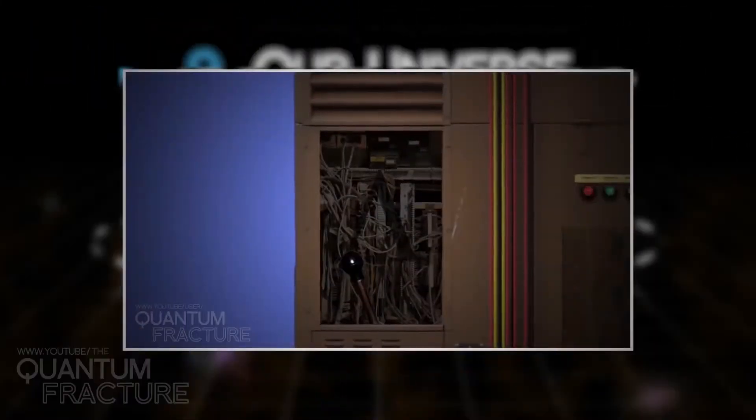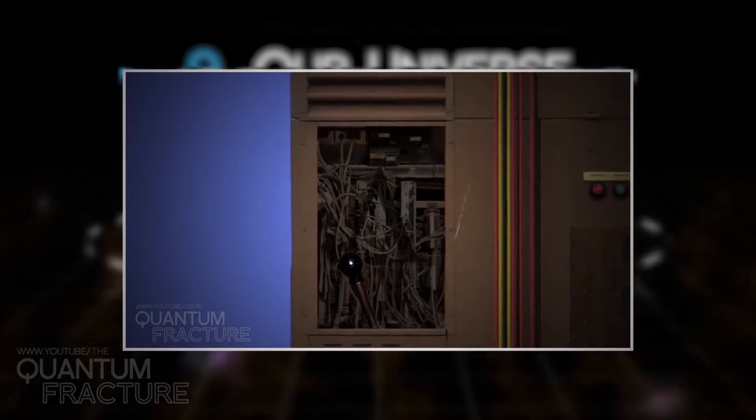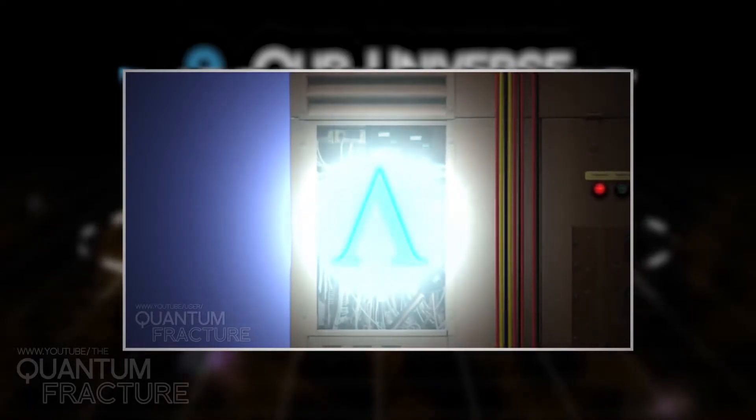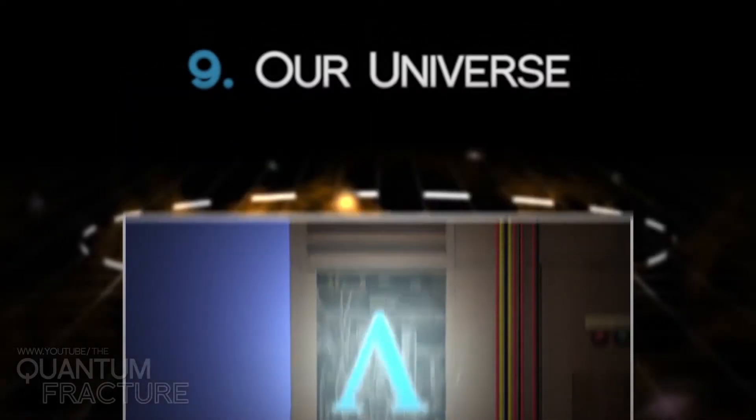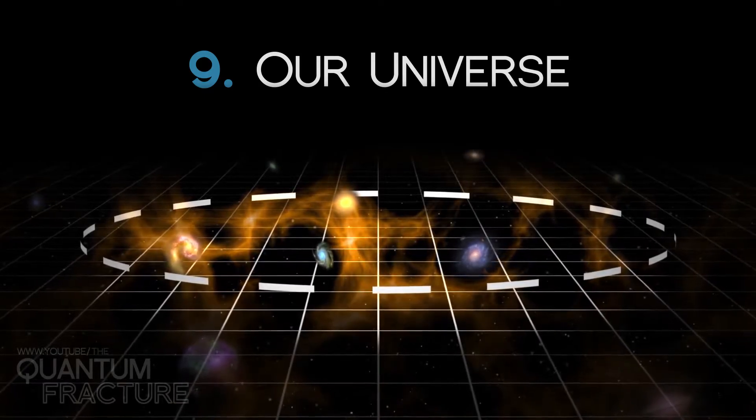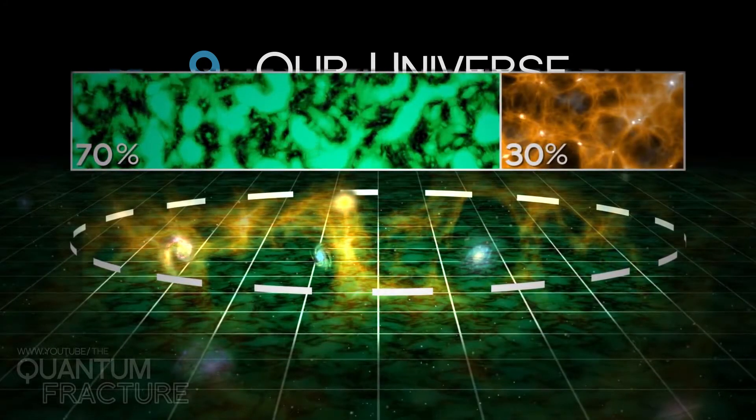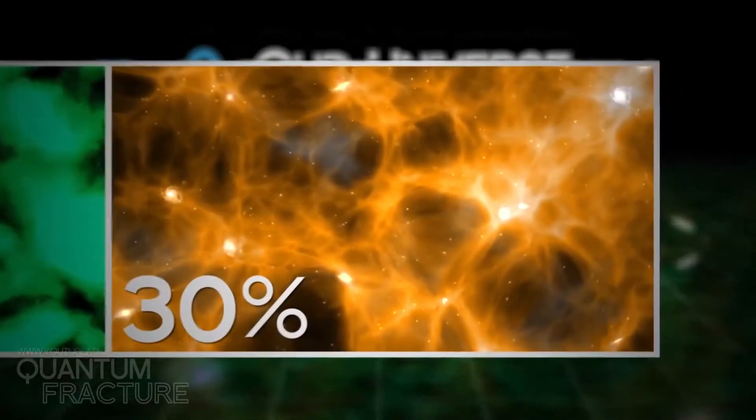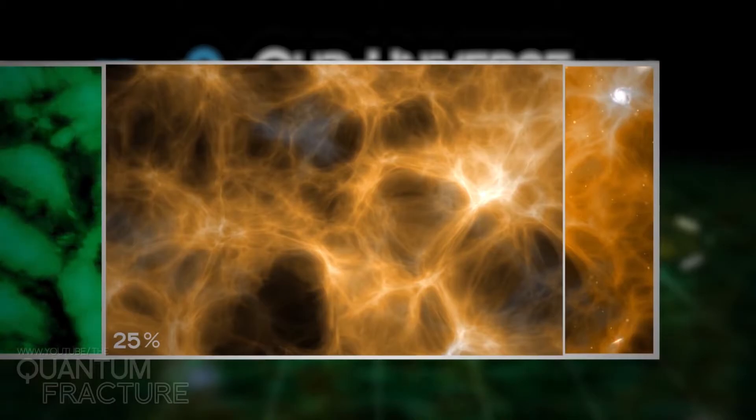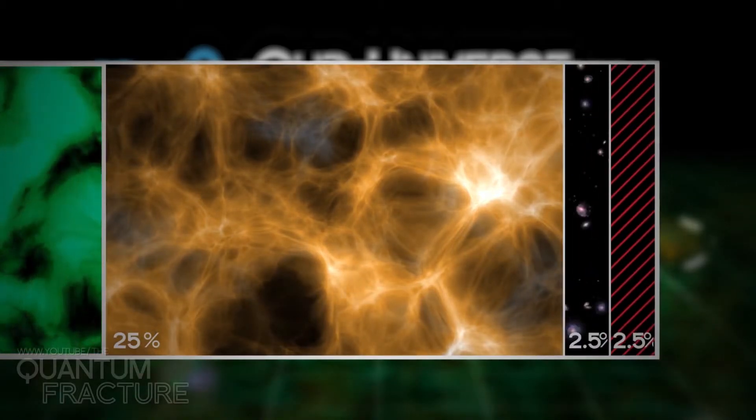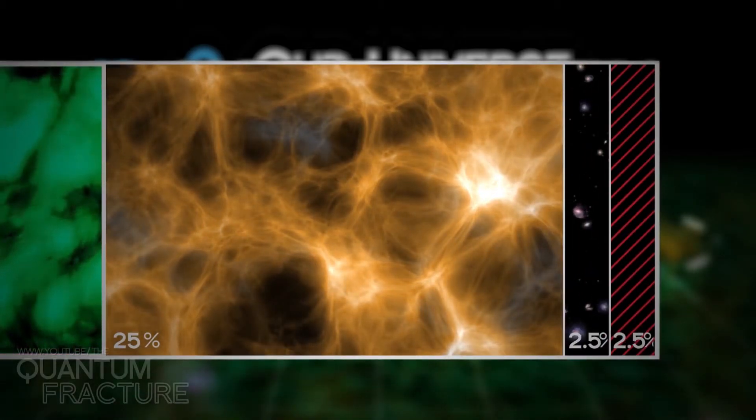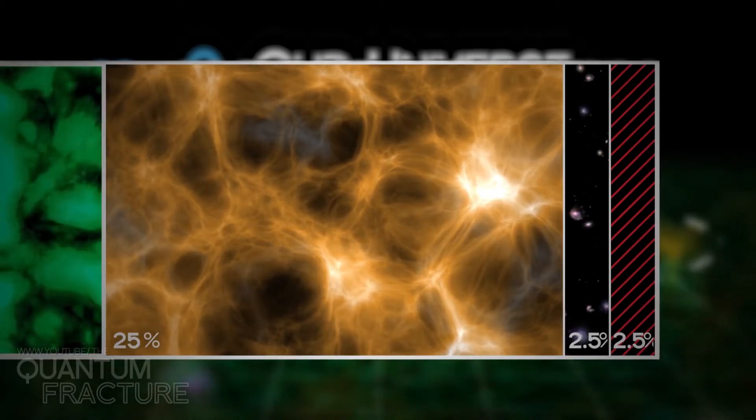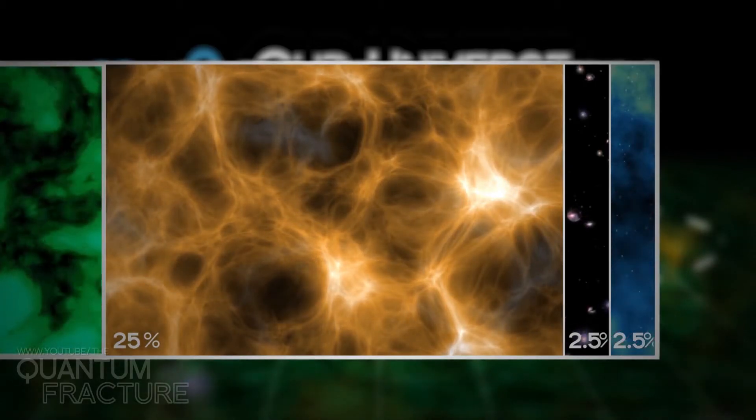Remember when I told you that cosmologists have had to reactivate the cosmological constant? That's because it's everywhere. Our universe contains roughly 30% matter and 70% dark matter. Furthermore, of that 30%, 25 is dark matter. And of the remaining 5%, our instruments can only observe half. It's accepted that this 2.5% is dust that doesn't emit light.